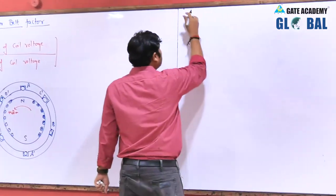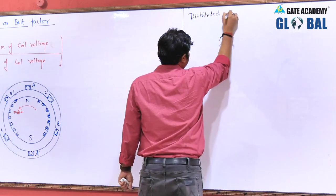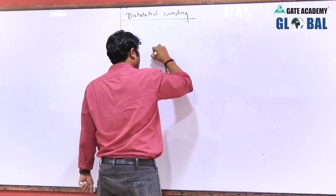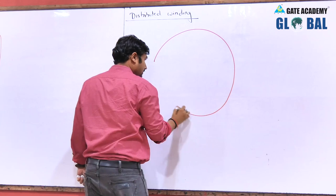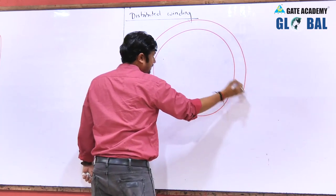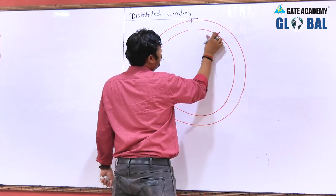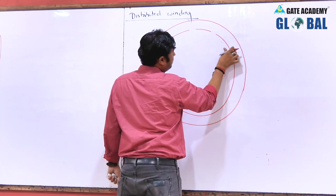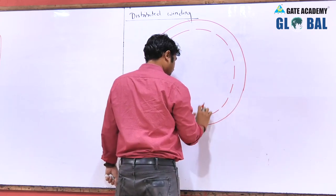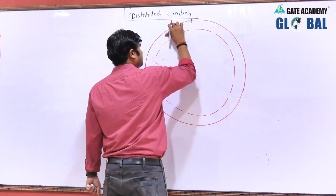Now let us look at distributed winding. In distributed winding, the coil sides of each phase are distributed into a number of slots. Let us suppose we have a stator with a total of 18 slots, numbered 1 through 18.